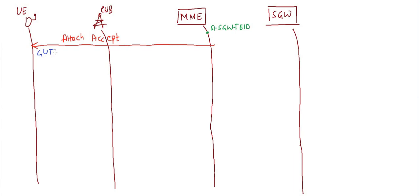The Attach Accept message will contain the GUTI, which is a temporary ID for the UE, the UE IP address, and the TAI list. The TAI list is created by the MME for that UE, so the UE can move within that tracking area without any tracking area update. Along with the TAI list, EPS Bearer ID, APN, and Quality of Service parameters will also be included.